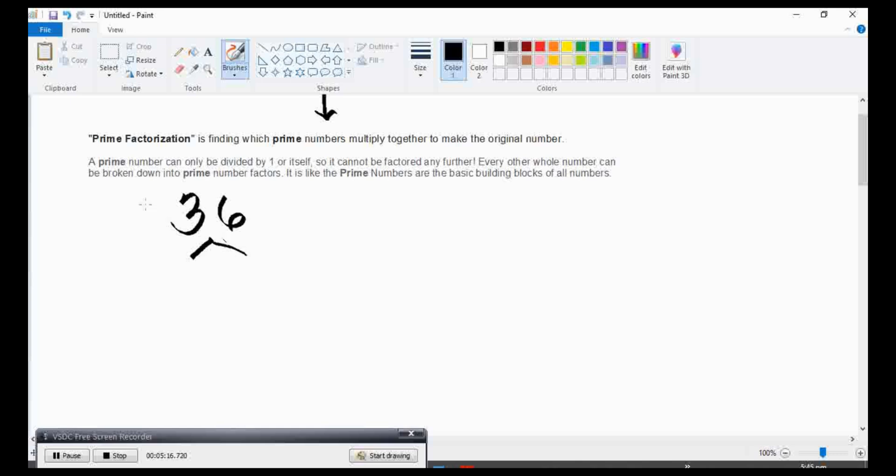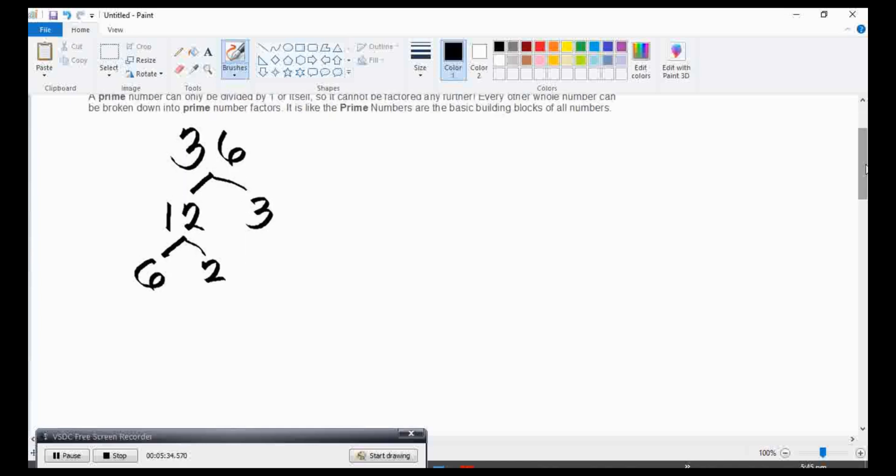Example: let us find the prime factorization of the number 36. Always remember, you have to find the factors until we reach the prime number. Factors of 36, we do have 12 times 3. 3 is a prime number. So 12 can still be factored. Factors of 12 are 6 and 2. 2 is a prime number. 6 can still be factored. Factors of 6 are 2 and 3. So the two last numbers are both prime numbers. So these are the factors of number 36.